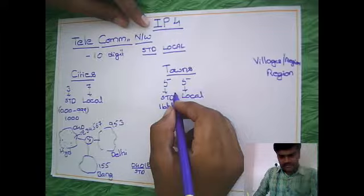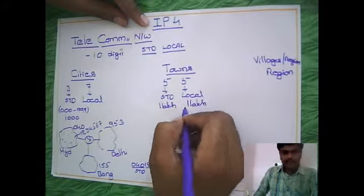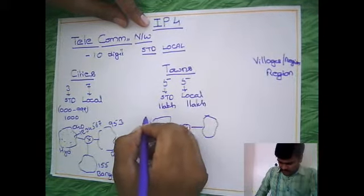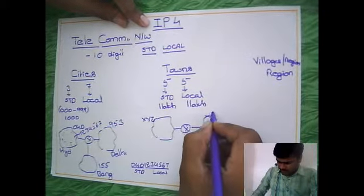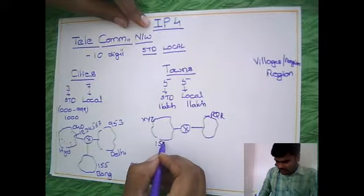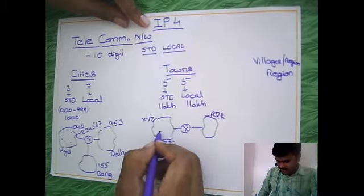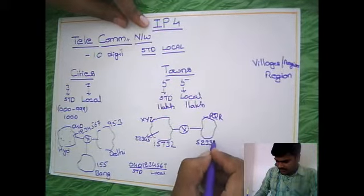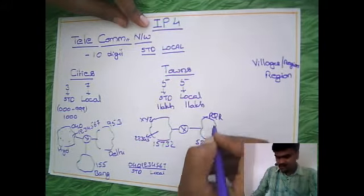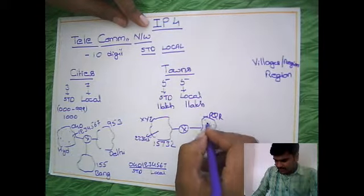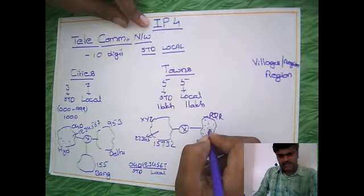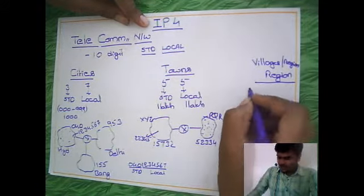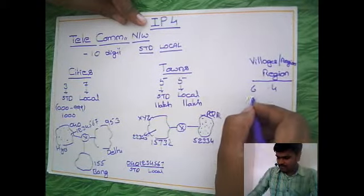You can represent 1 lakh numbers, and locally under each town you can connect 1 lakh telephones. Each town has one STD code, and internally you have some number — for example, 52334. Each connection within the town can be represented with a unique number. When you come to the villages or regions, 6 digits are for the STD part and 4 digits are for the local part.